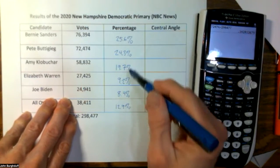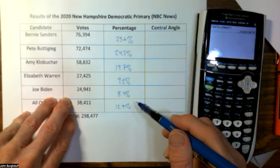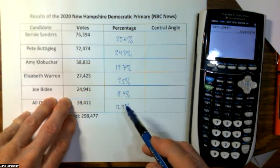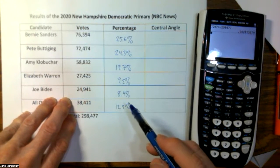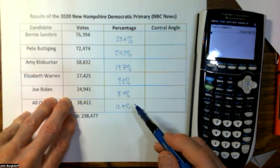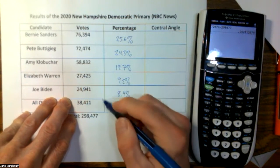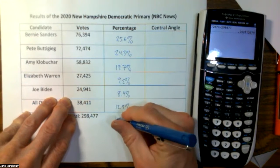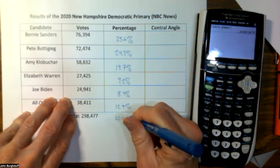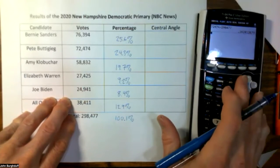Now, all of these percentages were rounded off as I went, so they should sum to 100%. We don't need to be too worried if it doesn't quite add up, because there is rounding. As it turns out, if you add up all these percentages, you get 100.1% — close enough.